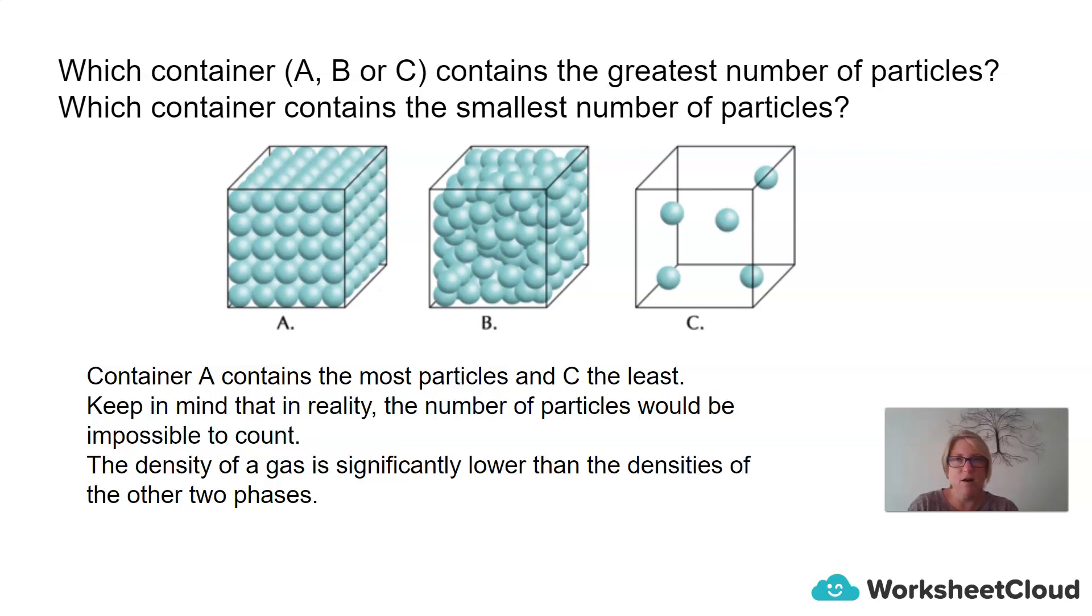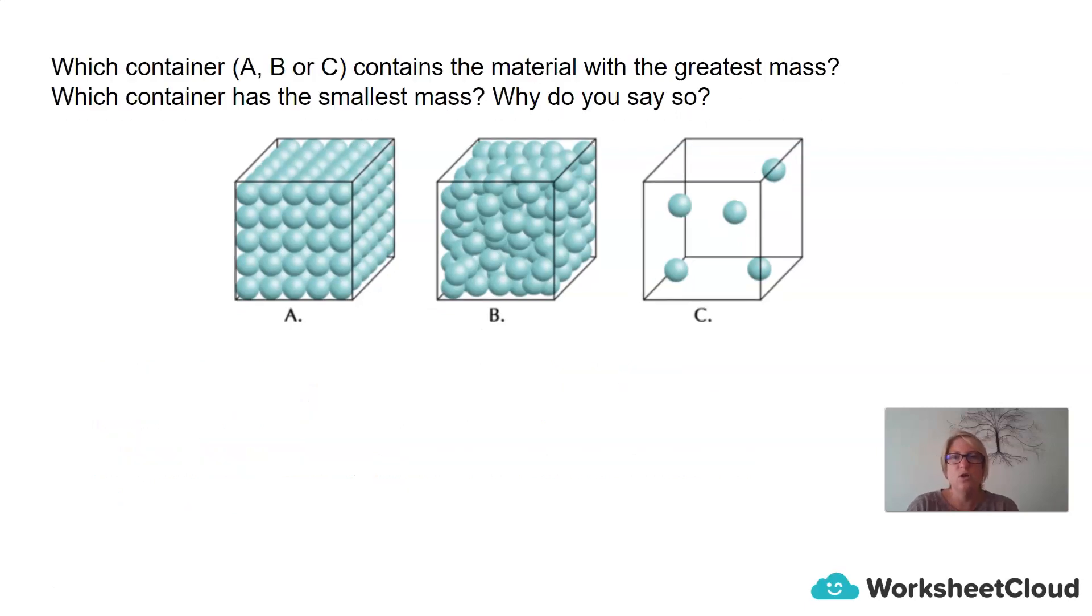The density of a gas is significantly lower than the density of the other two phases. So which container, A, B, or C, contains the material with the greatest mass? And which container has the smallest mass? And what is your reasoning for this? Why do you say this is so?